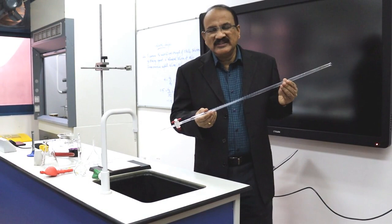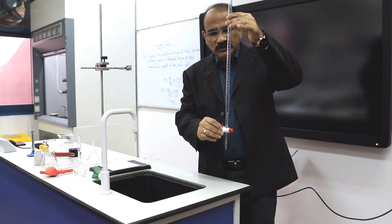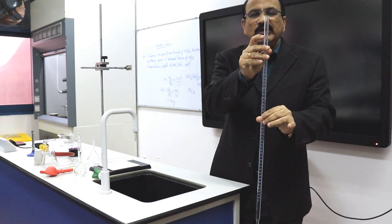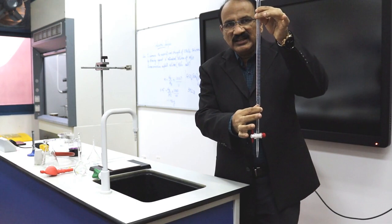The apparatus needed for this experiment. The first one is a burette. This is called a burette. The capacity of the burette is 50 ml. It starts from 0 ml and ends at 50 ml.